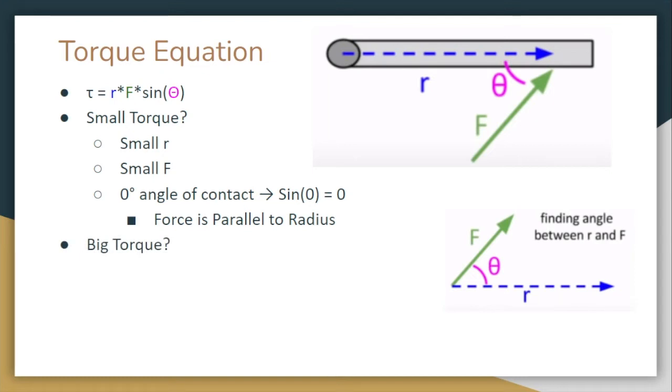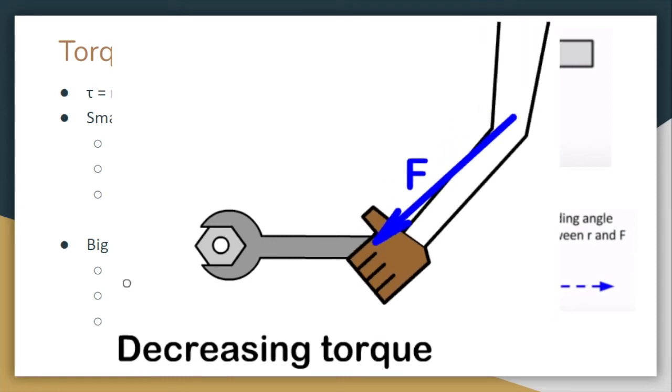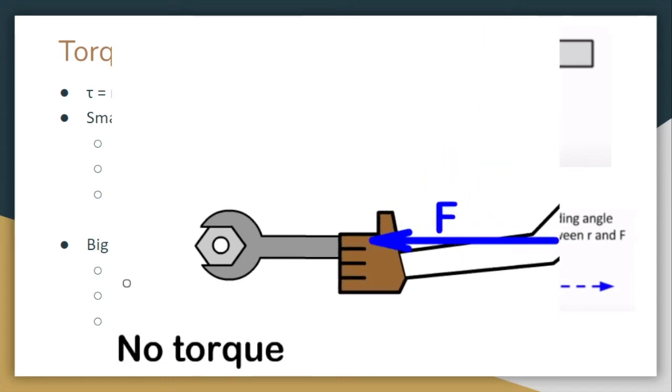Now let's take a look at the opposite side. How could we have a big torque? Well, big torque is just going to be the opposite. We could have a big R, or a big distance away from that pivot point. We could have a big F, which just means that we have a big force being exerted. And then we could have a 90 degree angle, because sine of 90 is at a maximum, which is going to give us one, which just means that our force is perpendicular to that radius. So over here, I have a little GIF for you guys showing the most torque. And then when we change that angle and make it more parallel to our wrench, it becomes less torque.